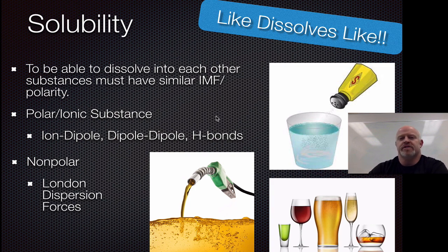comes down to is IMF. We say 'like dissolves like' - the phrase we use to remind ourselves that you need similar polarities and intermolecular forces for things to dissolve into each other. If you're a polar or ionic substance, you can dissolve into other polar or ionic things because they use ion-dipole, dipole-dipole, or hydrogen bonding as their intermolecular forces. All of these rely on